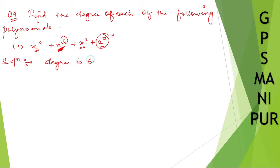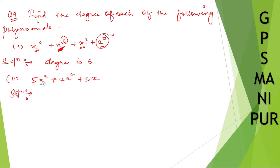Degree is 6. Roman number 2: 5x cubed plus 2x squared plus 3x. What is the highest degree? It is 3. Look here, the highest power is 3. So degree is 3.